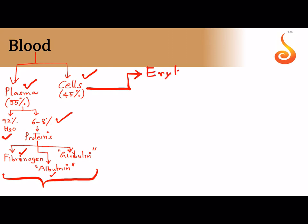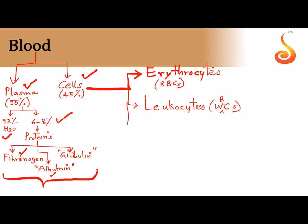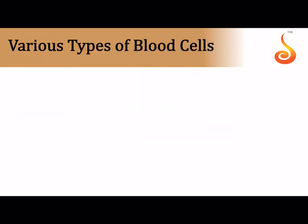There are three types of blood cells. Erythrocytes are the RBCs. Leukocytes are the WBCs. Lastly, platelets are technically referred to as thrombocytes. These are the three major types of blood cells, and you need to know what each of these three types are further classified into.